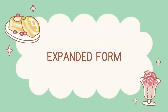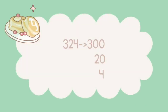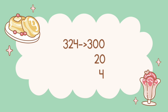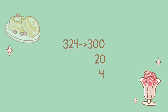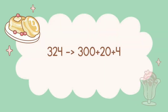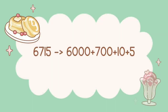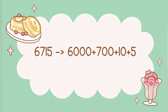A great way to see place value in action is to expand numbers to show that they are really combinations of different groups — this is called writing a number in expanded form. For example, we can expand 324: the 3 is in the hundreds place and means 300, the 2 in the tens place means 20, and the 4 in the ones place means 4, so 324 in expanded form is 300 + 20 + 4. Let's try another: 6,715 expands to 6,000 + 700 + 10 + 5.